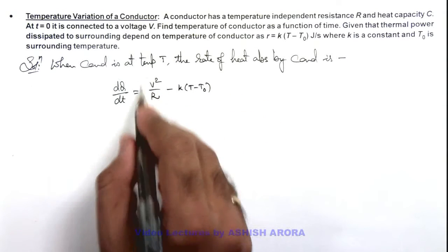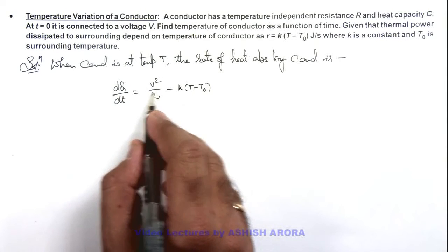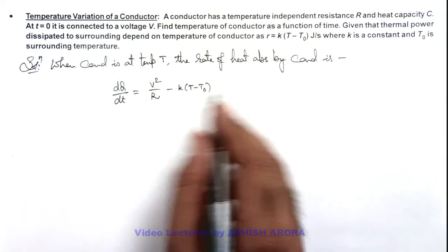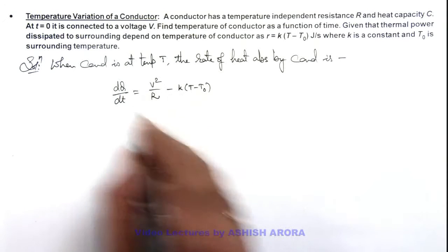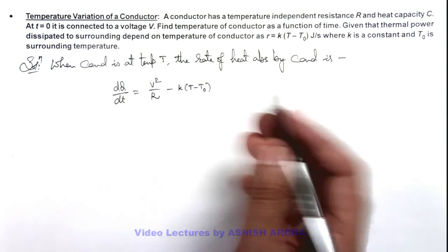As this is the total amount of heat per unit time generated within the resistance due to current flowing through it, and this the amount dissipated to surrounding, so the difference would be the one which is absorbed by conductor. It'll further raise the temperature of conductor.